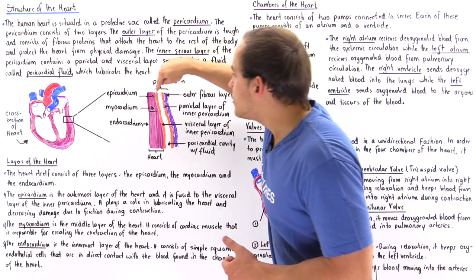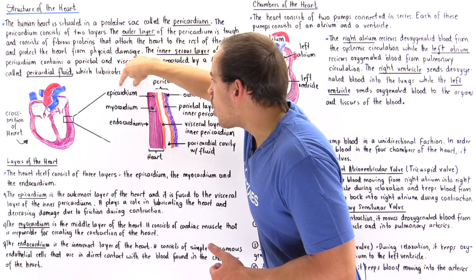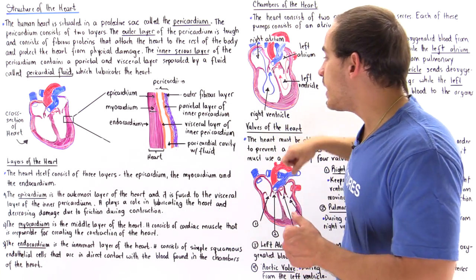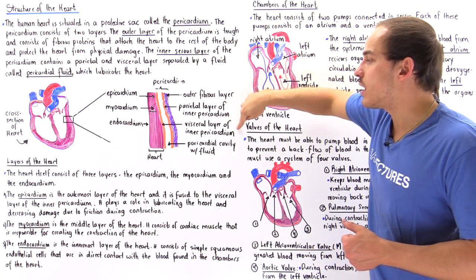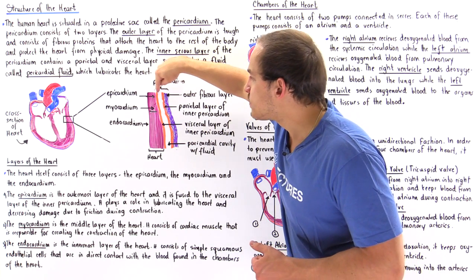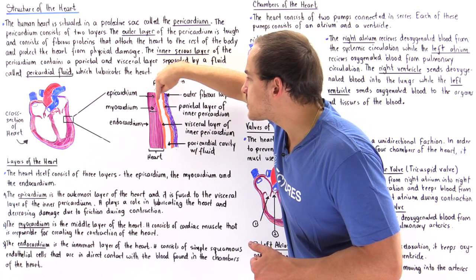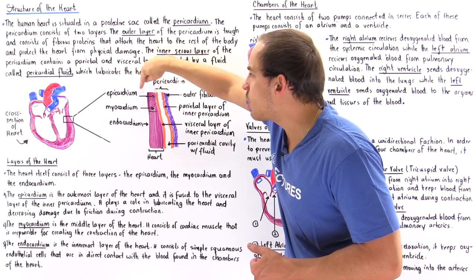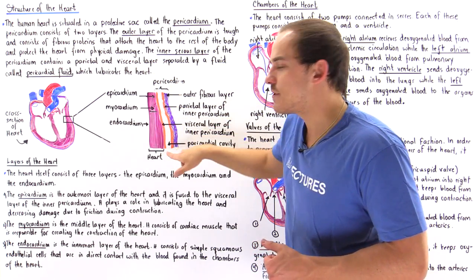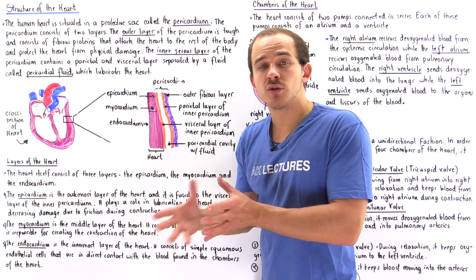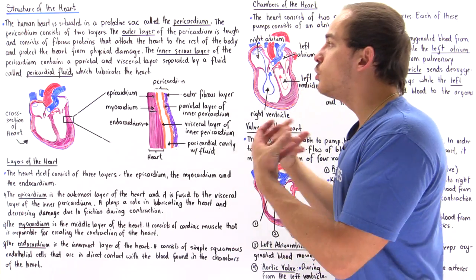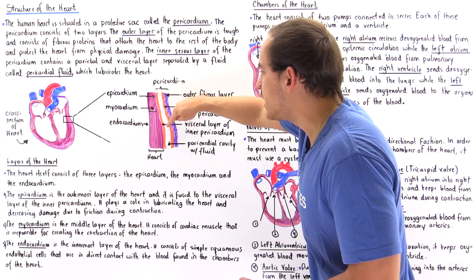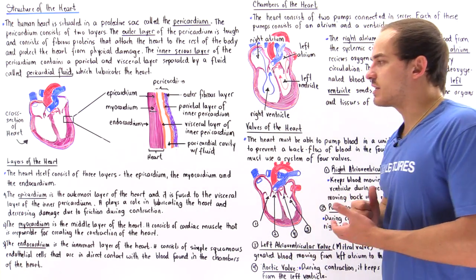The epicardium is physically fused with the visceral layer of the inner pericardium. Together, these two layers play a role in lubricating our heart along with the fluid found within the pericardial cavity.